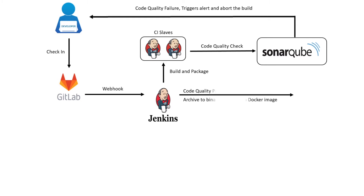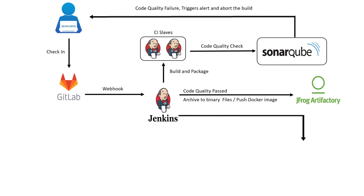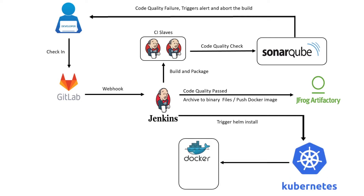Once the code meets the quality standard, the archived PHP Application Package will be pushed to the JFrog Artifactory repository. The Docker image will be built using Dockerfile and pushed to the JFrog Container Registry. In the final stage, Jenkins will deploy the application using the Helm Chart, which will create a deployment on the on-prem Kubernetes cluster, creating a replica set, which in turn creates pods using images from the JFrog Container Registry.